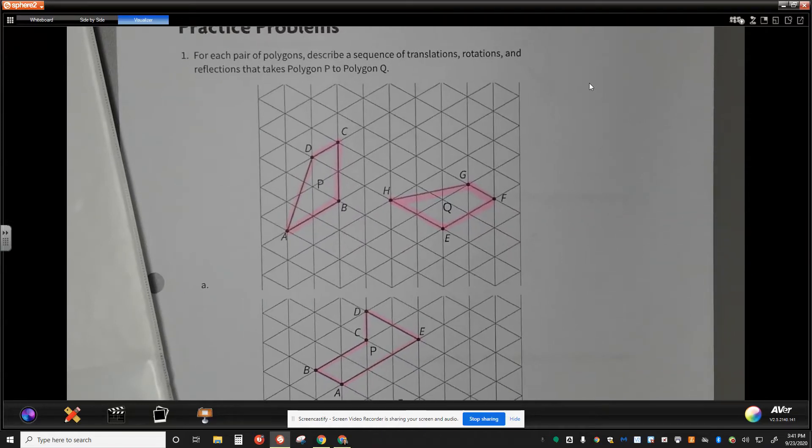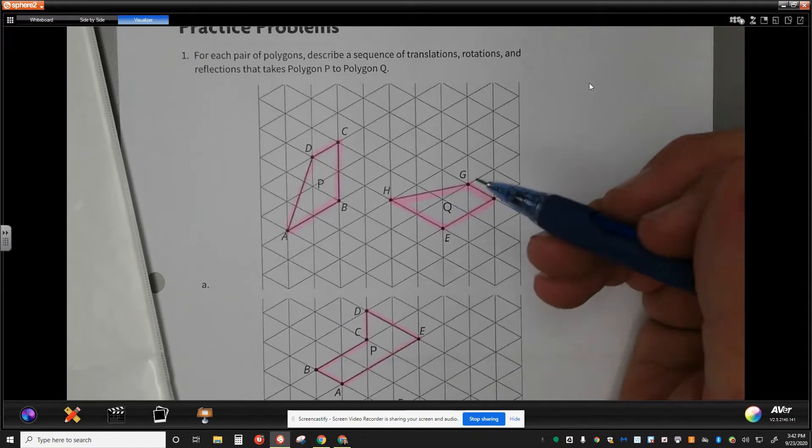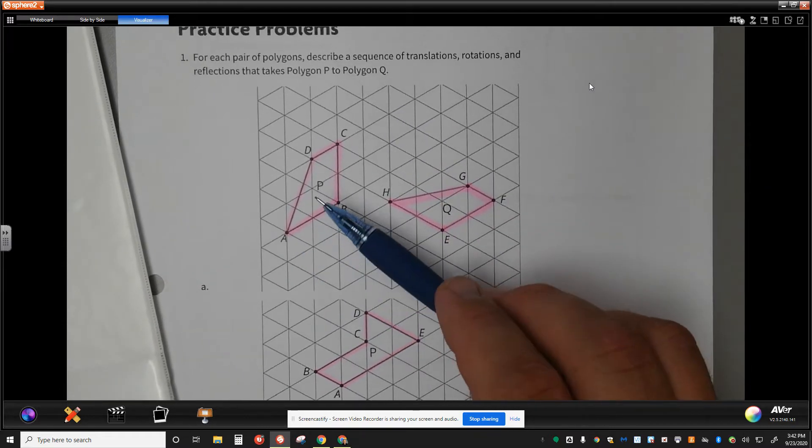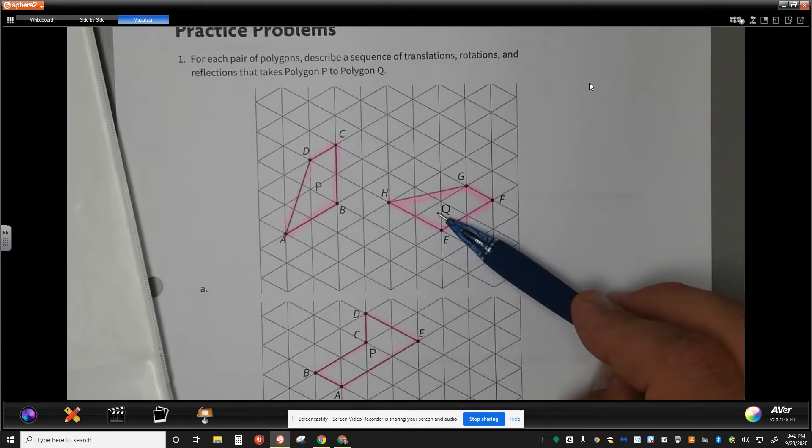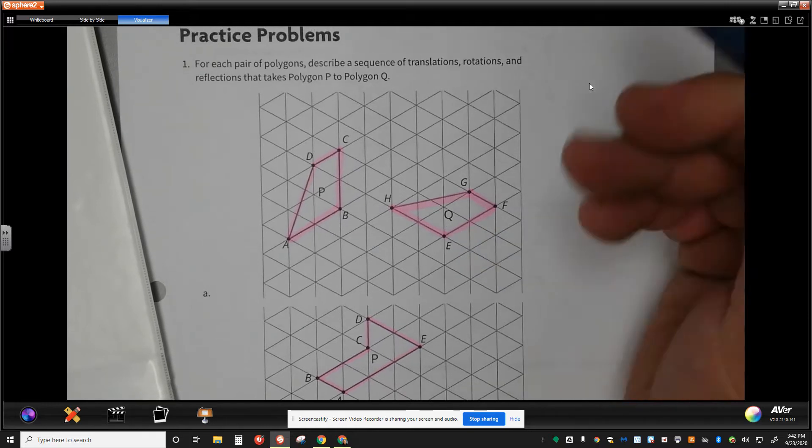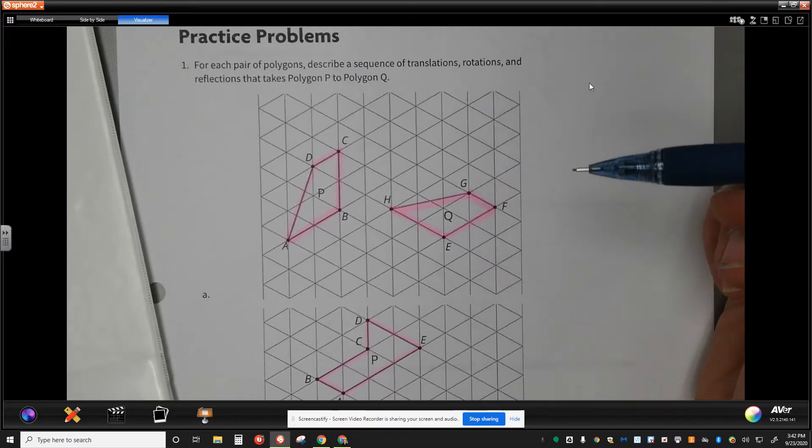Hey, I thought I'd just offer some quick ideas to go with the homework today. What you'll see as you're looking at your screen is the first problem is talking about taking polygon P to polygon Q and talking about making sure that you're using a translation, rotation, or reflection.